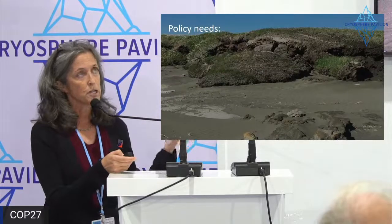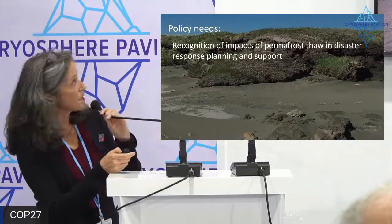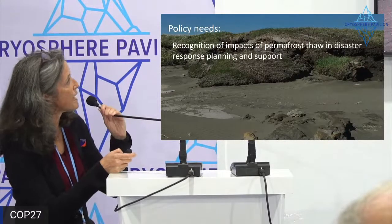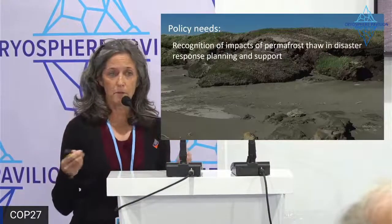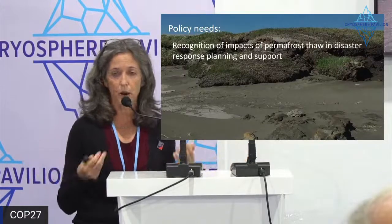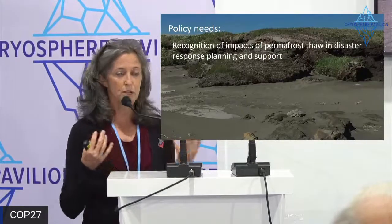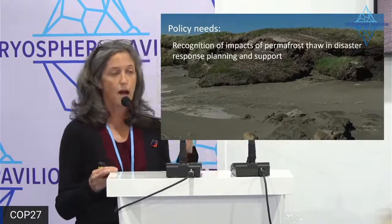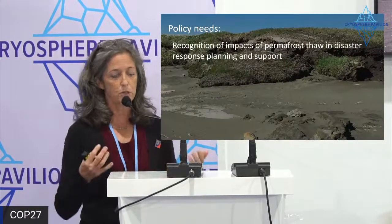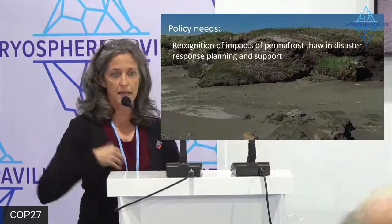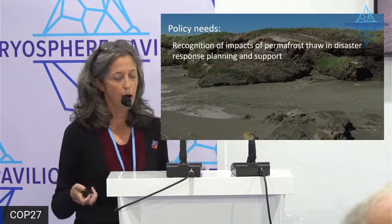In terms of policy needs around adaptation to these local-scale tipping points: first, recognition of permafrost thaw in disaster response planning and support. Things considered 'slow onset' — like permafrost thaw and erosion — which in a person's lifetime are not that slow — have no mechanism for dealing with them. In the US, FEMA deals with hurricanes. But if erosion happens and six months later your house falls off the cliff, there's currently no policy to address this.